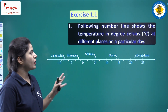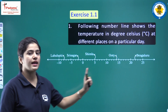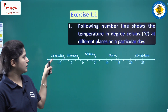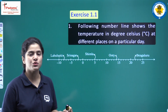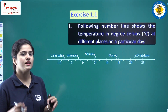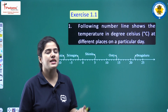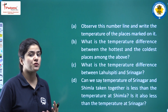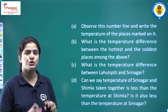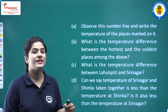The first question: the following number line shows the temperature in degrees Celsius at different places on a particular day. On this number line, different places are mentioned — Lahulspiti, Srinagar, Shimla, Uthi, and Bangalore — and these places have some particular temperature. We'll solve the questions regarding this number line. The first part says: observe this number line and write the temperature of the places marked on it.